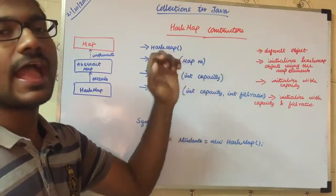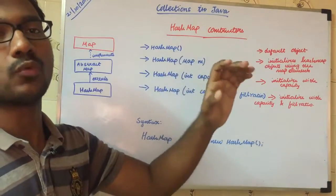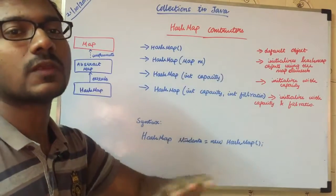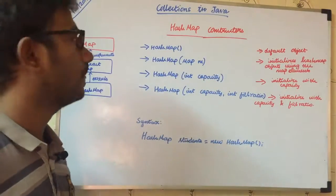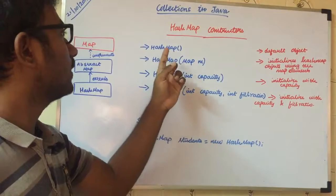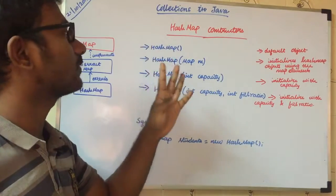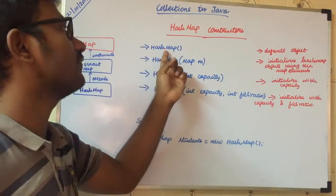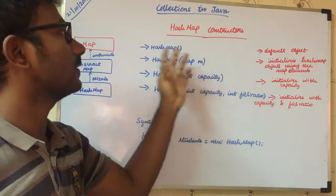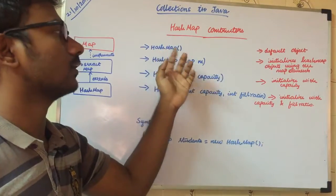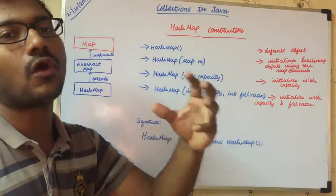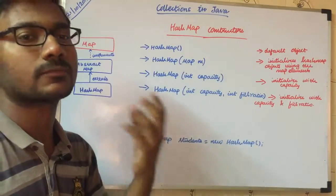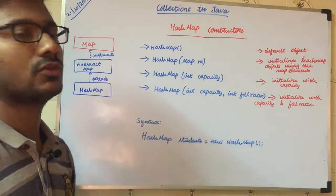Let's look at the constructors in asMap. In AsMap, there are four types of constructors. The first is the default constructor. This default constructor creates an asMap object.